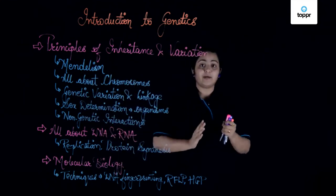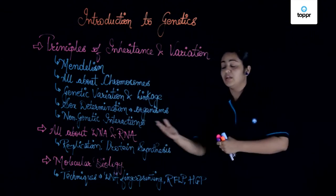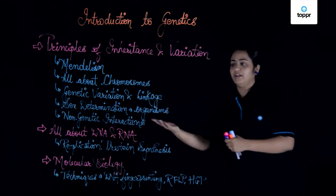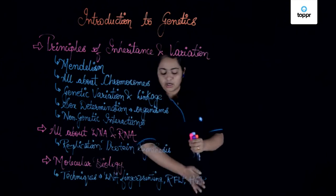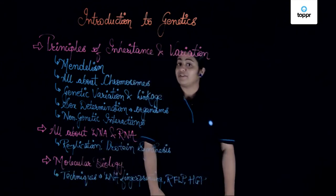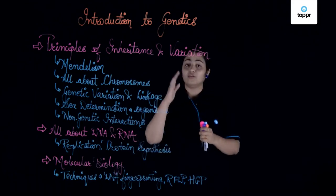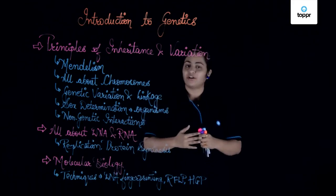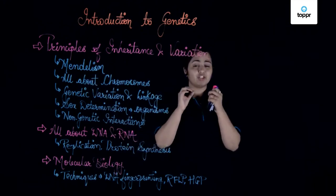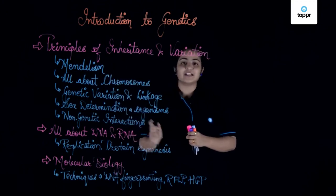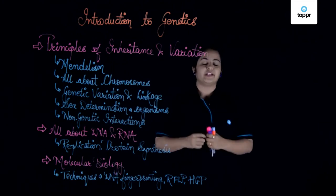Then we move ahead and take a deeper look at how the structure of DNA and RNA is actually present, and how protein synthesis and the replication of DNA and RNA takes place. At the end, we'll be talking about a few advanced techniques in molecular biology. This was an introductory note on what we are going to study in the complete unit of genetics. Meet you in the next lesson where we talk about Mendelism concepts and the terms related to genetics. Thank you.